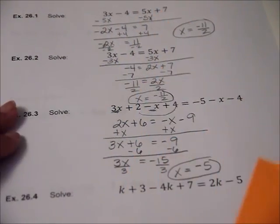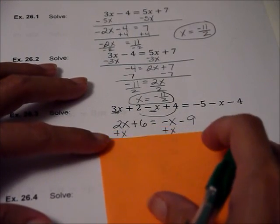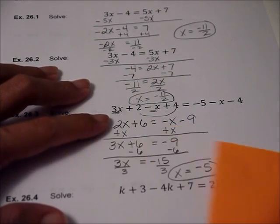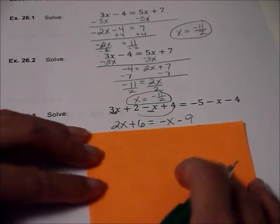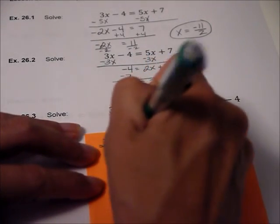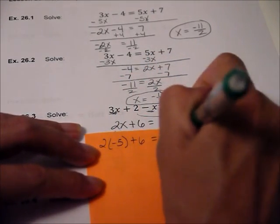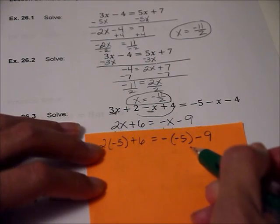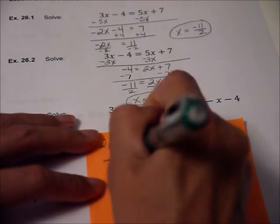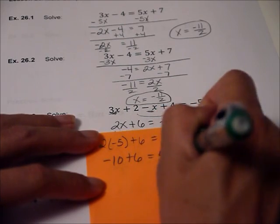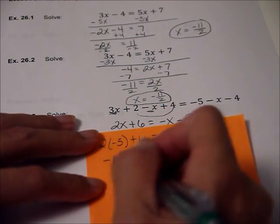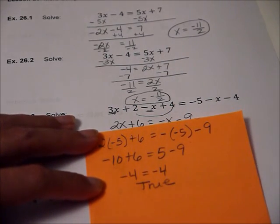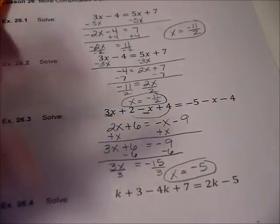And now I'm going to try that. Do I need to plug it in up here? Not really because I've already combined like terms. So I'm going to plug in negative five to this. I got negative ten plus six equal positive five minus nine. So it looks like we have negative four and negative four. True. So we have the correct answer there.